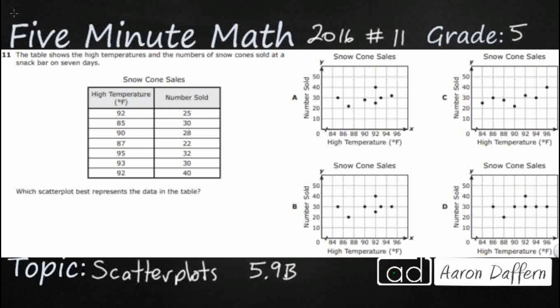So we have a table here, and it's going to show the high temperatures and the numbers of snow cones sold at a snack bar on seven days. And so we have these scatter plots. So what are these scatter plots here? Well, these are a new type of graph that we see in 5th grade, introduced to us for the very first time, and it acts very much like a coordinate plane. So our high temperature is going to act like our x-axis, and our number sold is going to act like our y-axis.